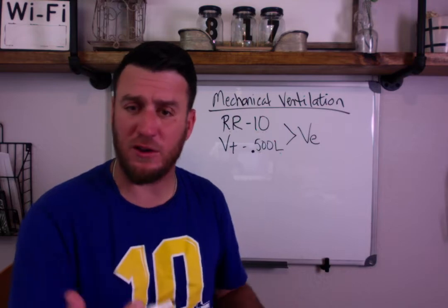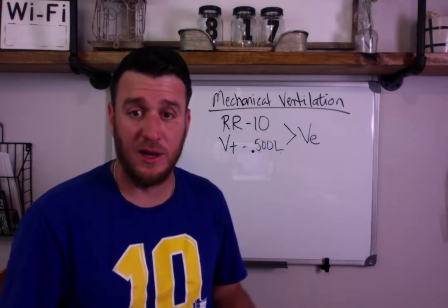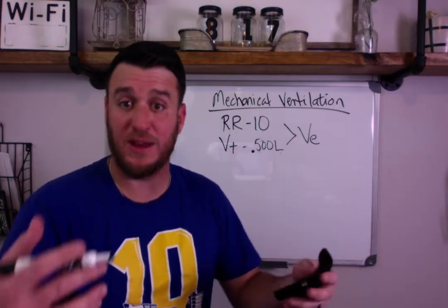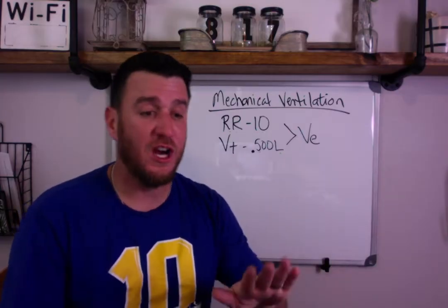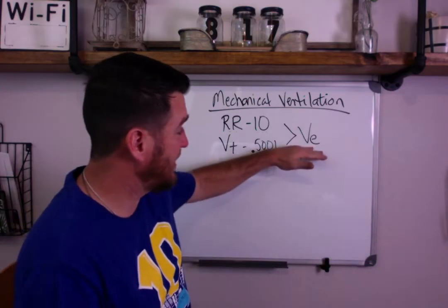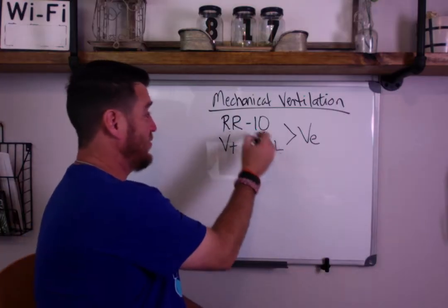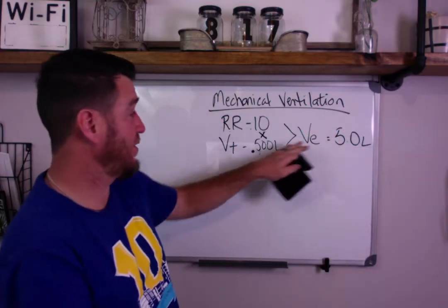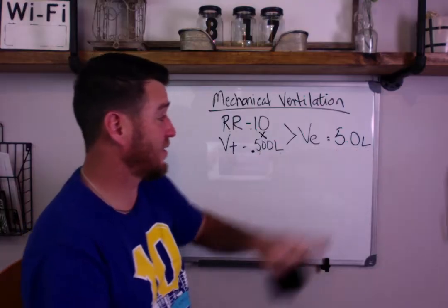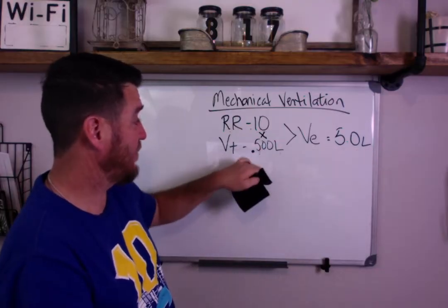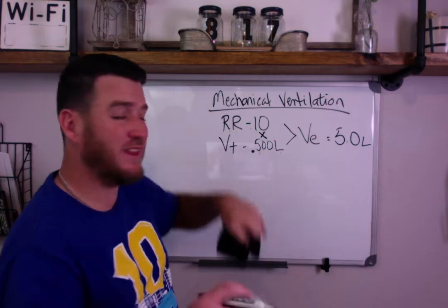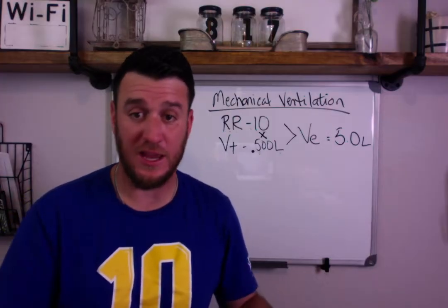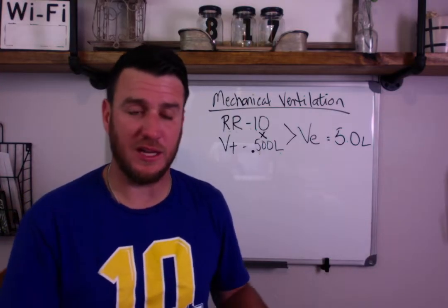When you set a respiratory rate and a tidal volume together, these will equal a minute ventilation — a minute volume. We're doing this right now breathing normally. We take a breath in, let it out, do it again every five, six, seven seconds, and at the end of a minute we have moved a total volume represented by our minute volume. We calculate this by doing respiratory rate times tidal volume equals minute volume. So this person's minute volume equals 10 times 0.5 liters, giving a minute ventilation of five liters per minute. That's a good minute ventilation, assuming it controls your CO2 and pH where it needs to be.